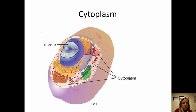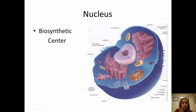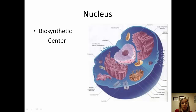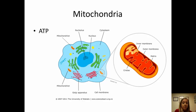The nucleus is the largest organelle and the biosynthetic center of the cell. It's surrounded by a nuclear envelope with pores — those little dark holes you can see. It has a nucleolus and contains genetic material, which we'll talk about at the end.